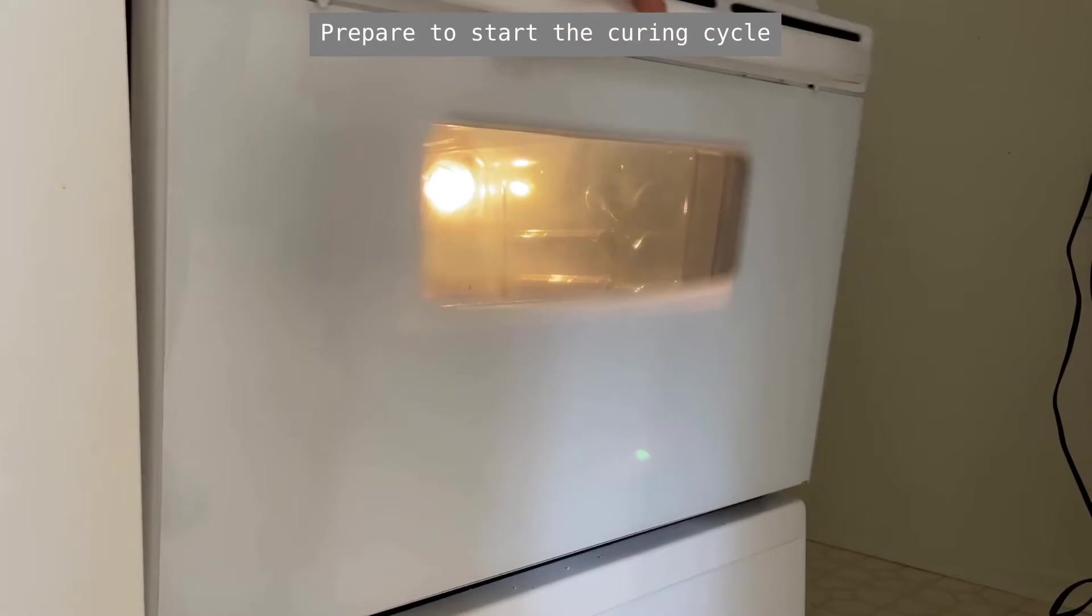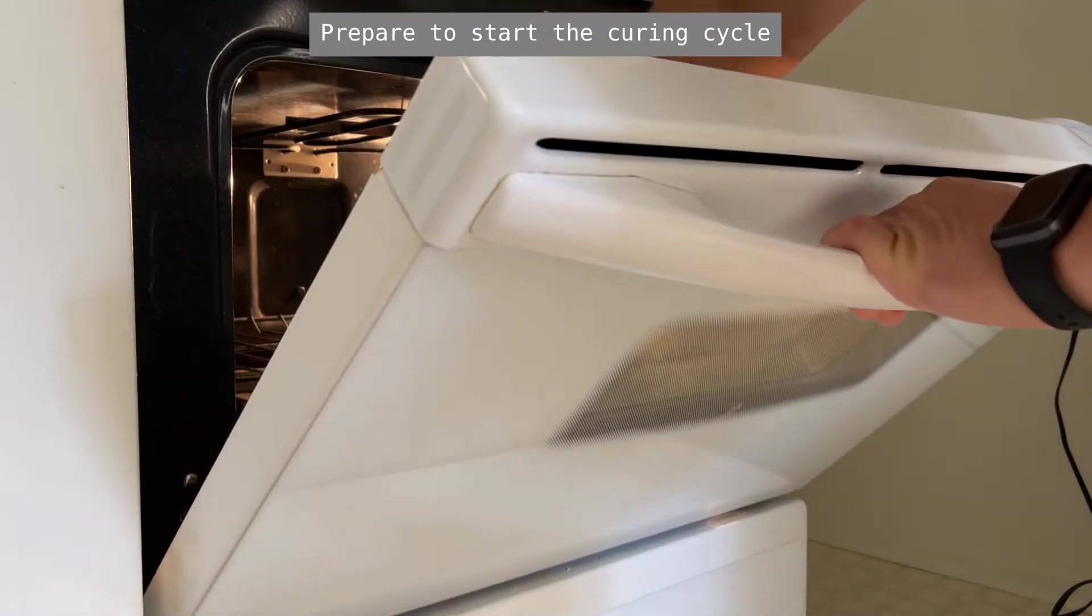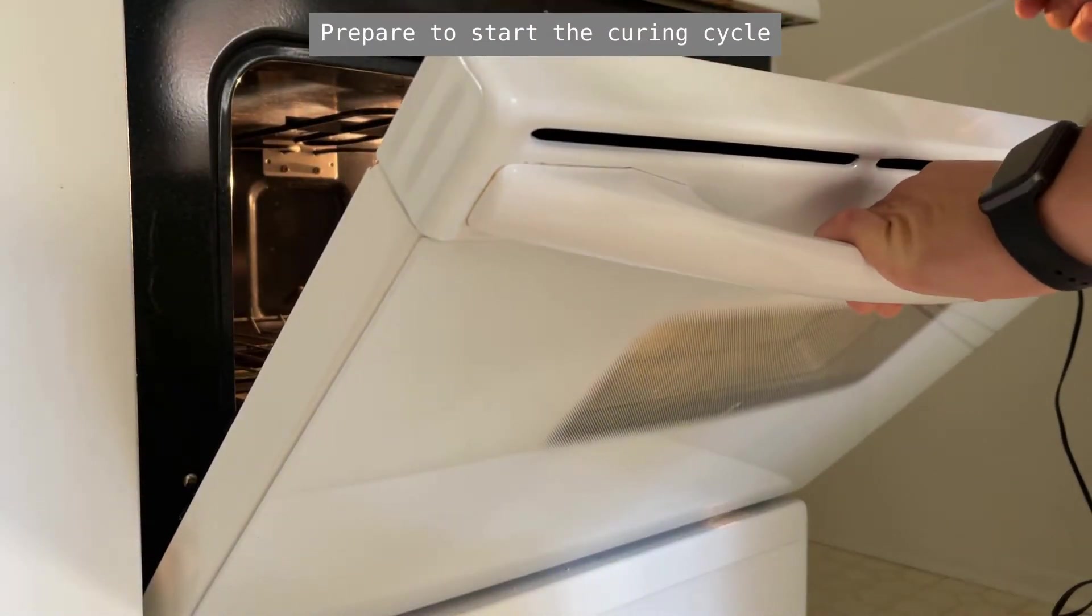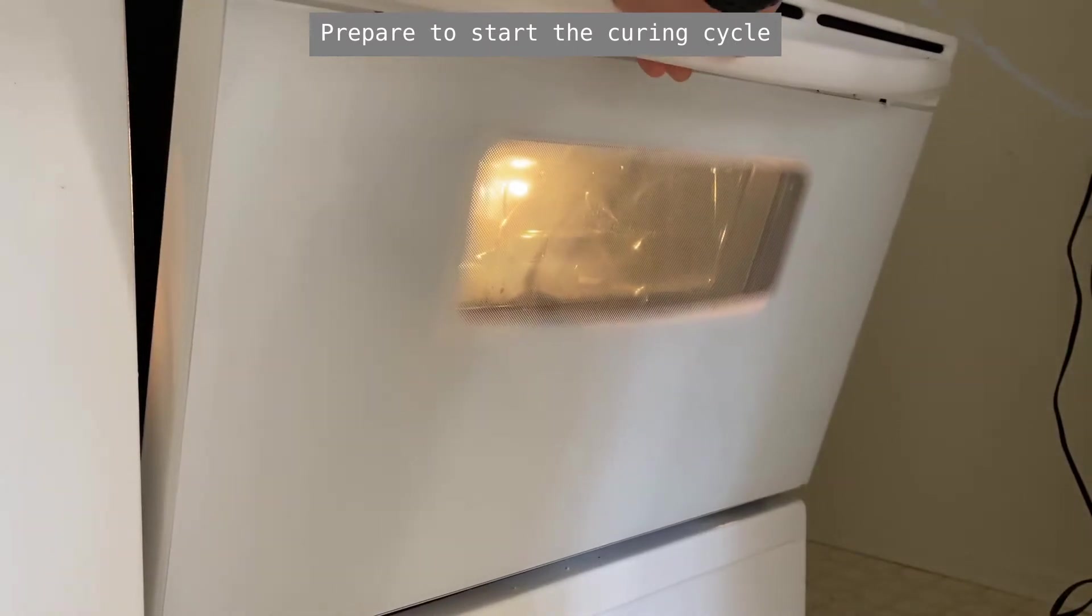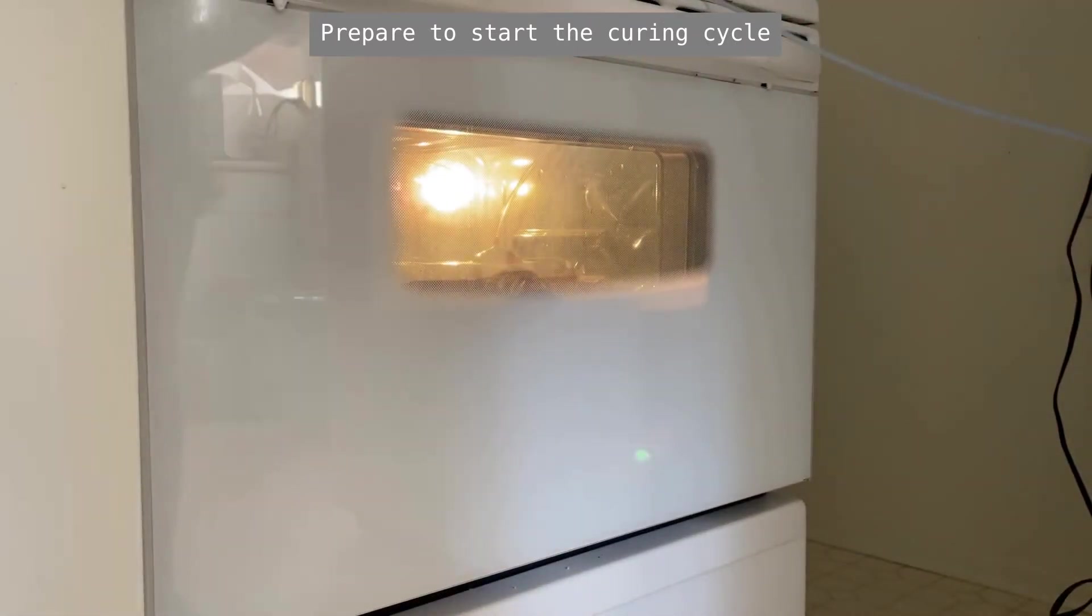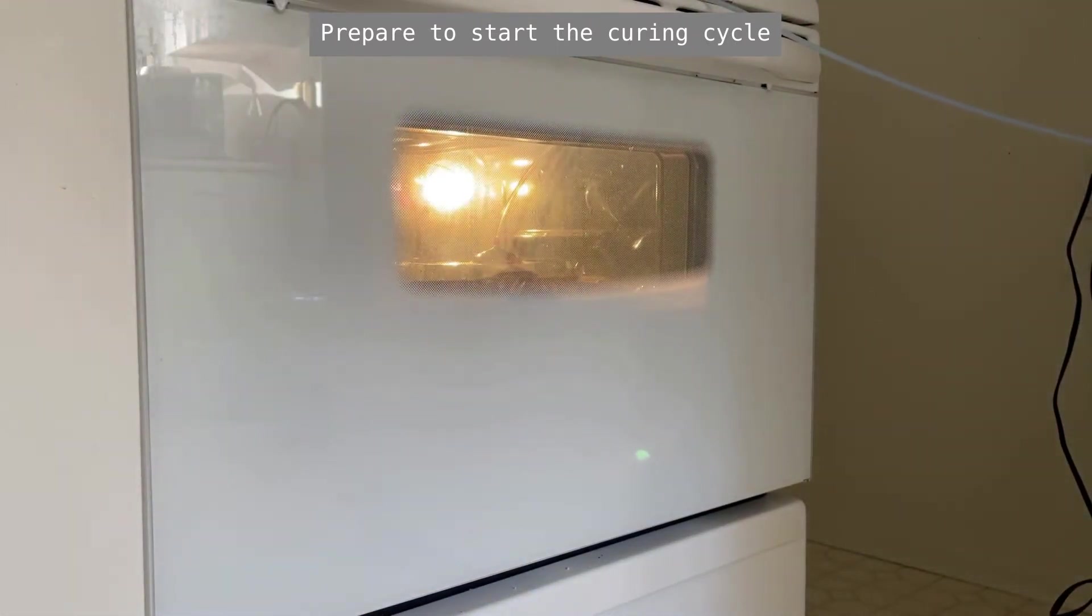Once the vacuum assembly has sat for a day, we can place it in the oven and follow the curing profile as closely as possible. A heavy baking sheet is placed below the assembly to minimize direct infrared radiation from the oven elements on the bottom.